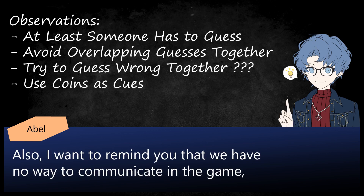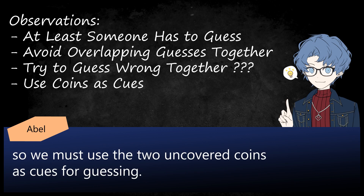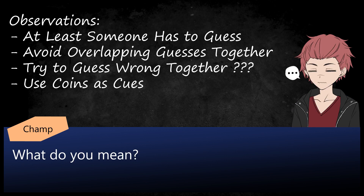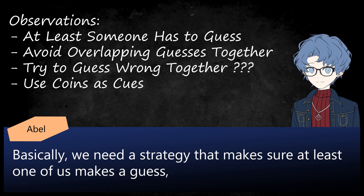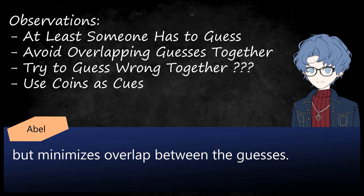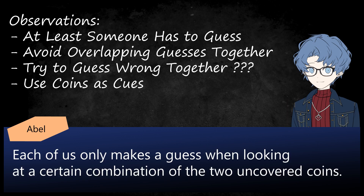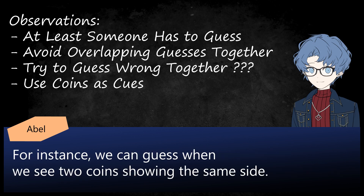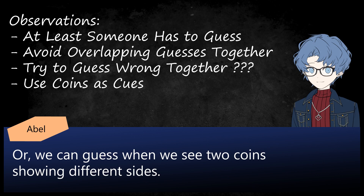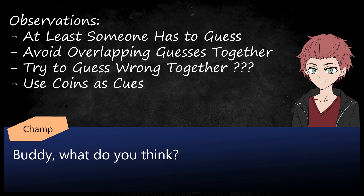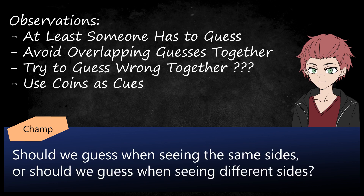"That does sound more efficient. Also, I want to remind you that we have no way to communicate in the game, so we must use the two uncovered coins as cues for guessing." "What do you mean?" "Basically, we need a strategy that makes sure at least one of us makes a guess, but minimizes overlap between the guesses. So we use the coins as cues — each of us only makes a guess when looking at a certain combination of the two uncovered coins. Should we guess when we see the two coins showing the same side, or when they show different sides?"